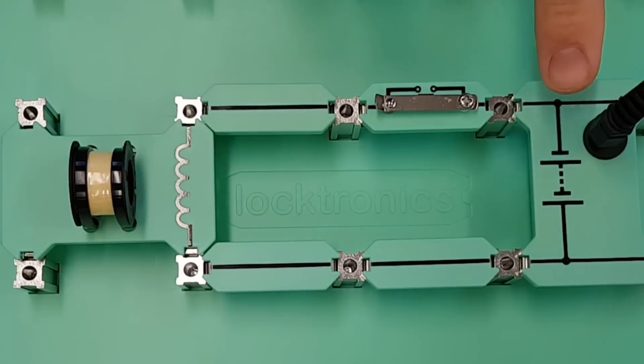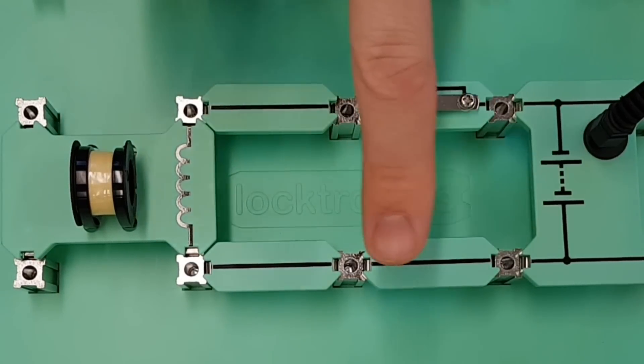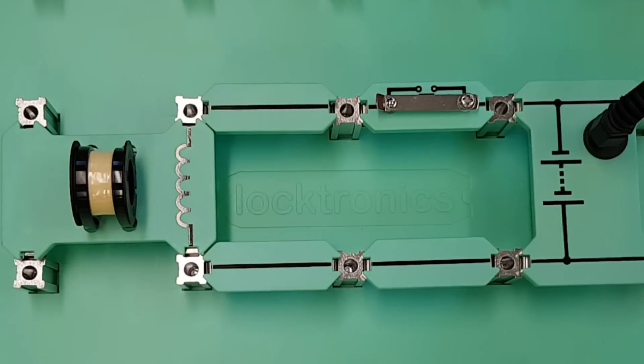So this is actually a DC supply coming into this circuit. Now DC means direct current, and that means that the current is flowing in one direction around the circuit at all times.